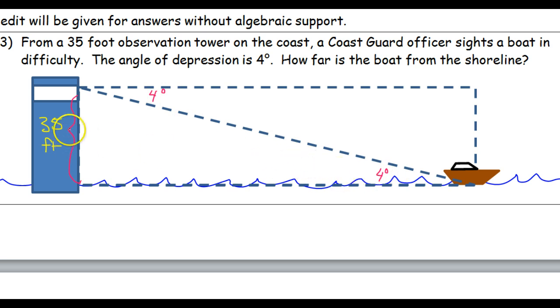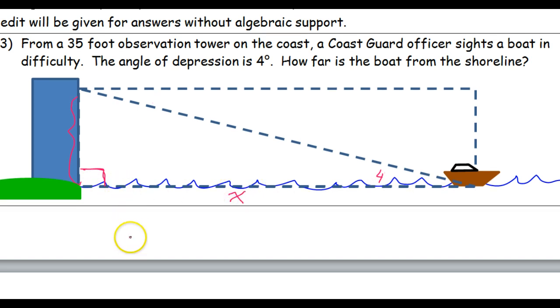At any rate, so we have this 35-degree height and this 4-degree angle. So I'm going to go ahead and use this triangle. And so we want to find out how far the boat is from the shoreline. So I guess this is the shore over here where the observation tower sits. So there, I added the shoreline in the picture. They did say that the observation tower was on the coast. So that distance would be like this right here, this x.